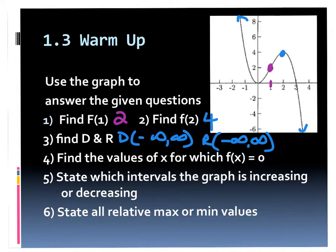Number 4 says find the values of x for which f of x equals 0. Those would be 0 and 3. Because it just says find the values of x, you just have to give the x values. If it asks for where the intercepts were, you'd give it in point form.